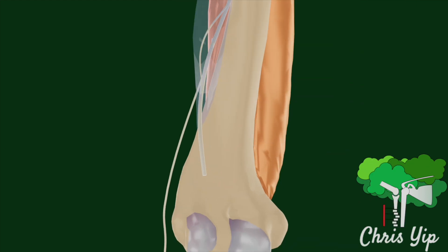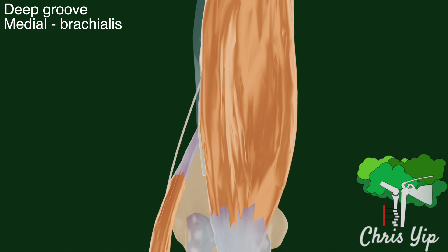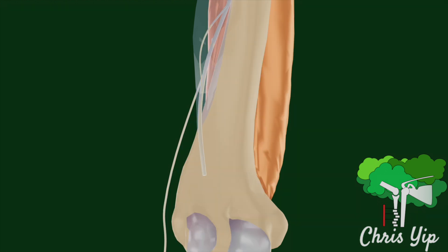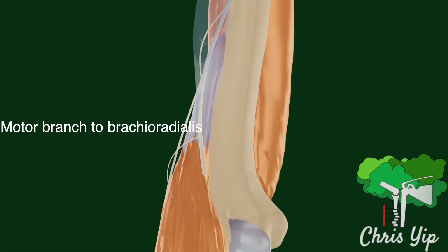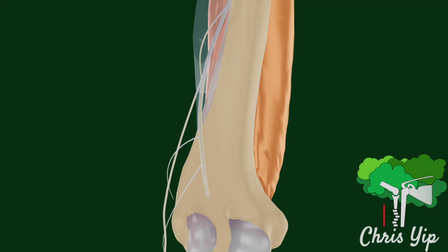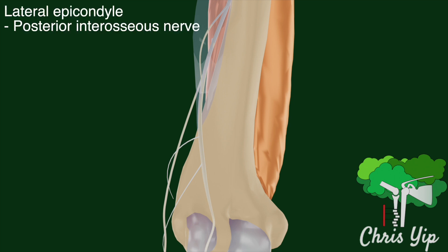At the level of the elbow, the nerve lies in a deep groove between the brachialis medially, with the extensor carpi radialis and brachioradialis laterally. Around three finger breadths proximal to the lateral epicondyle, a branch runs off to supply the brachioradialis. Another branch branches off slightly distally to the extensor carpi radialis. Lower down at the site of the lateral epicondyle, the radial nerve divides into the posterior interosseous nerve and the superficial radial nerve.